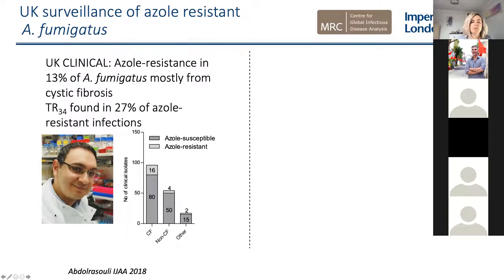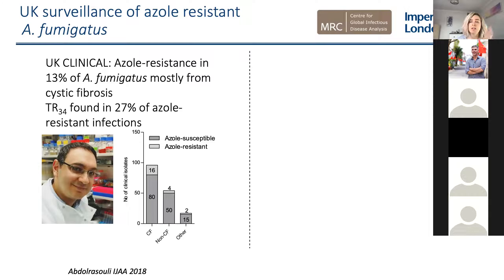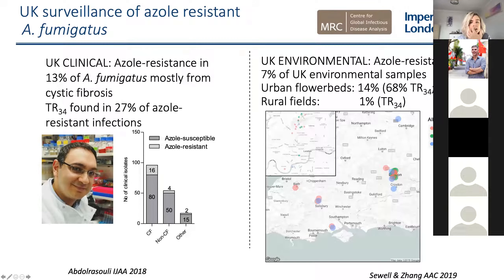Ali Reza Abdul Rasooli, a PhD student of Matt and Darius Armstrong-James who passed his viva in 2019 and now works at King's College London, did this amazing UK surveillance of azole-resistant Aspergillus. He found that in clinical isolates, azole resistance was present in 13% of isolates, mostly from cystic fibrosis patients, and the TR34/L98H combined resistance polymorphism was playing a role in 27% of those azole-resistant isolates — so it's quite high.